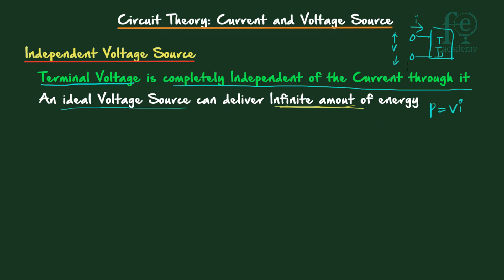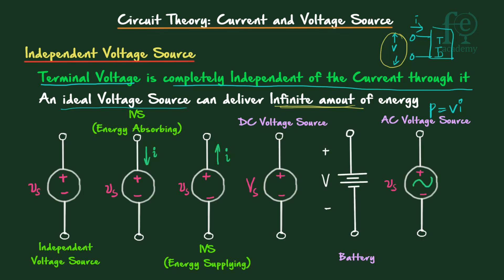Keep in mind that an ideal voltage source is a theoretical device — it can provide infinite amount of energy. We need a particular voltage which is independent of the current, so it can give infinite current. An ideal voltage source can deliver infinite amount of energy, which is not practically possible. This is an ideal concept. The symbol shows a circle with plus and minus marked inside, and Vs written — where S represents source.